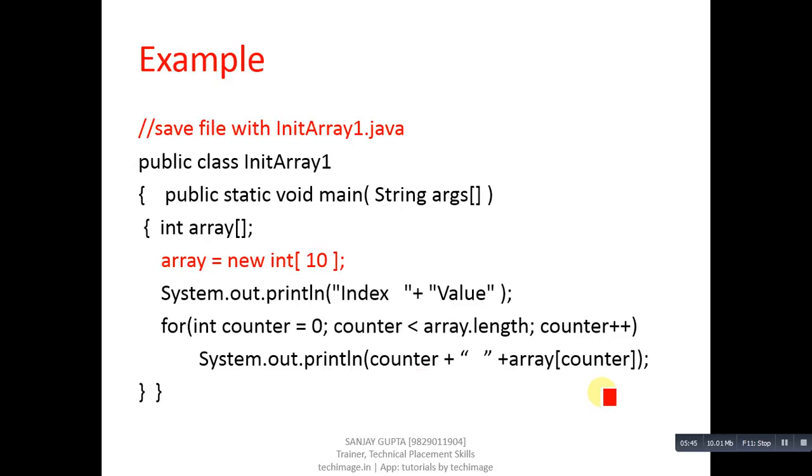First it will print - counter will print zero, then array[counter] will print element on 0th index, then index line one and the value which is available on index number one, and so on. All the 10 elements will be printed. I have not assigned any value to this array, so this array will print 10 times 0.